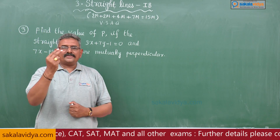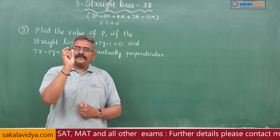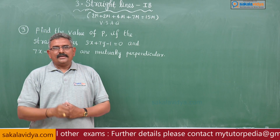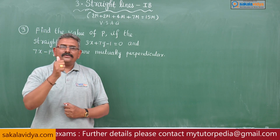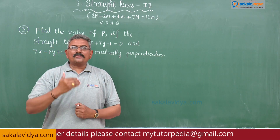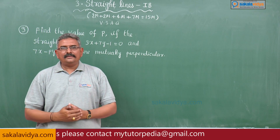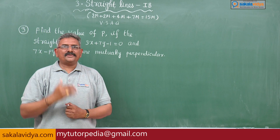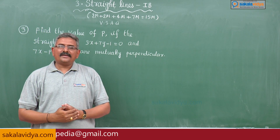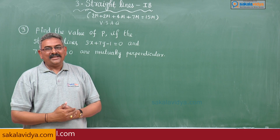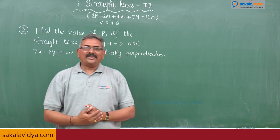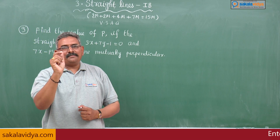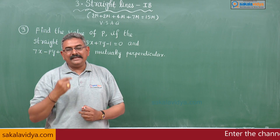The equations of the two lines are given in the form Ax + By + C = 0. We should know the formula to find the slope of any line in this form. That formula is: slope = minus A by B, i.e., minus the x-coefficient divided by the y-coefficient.